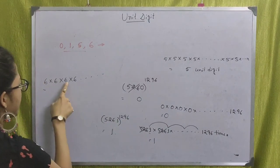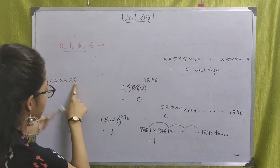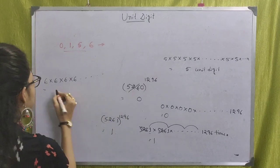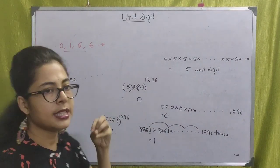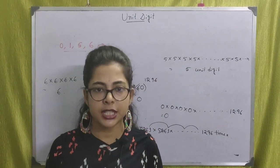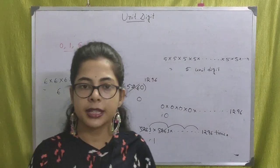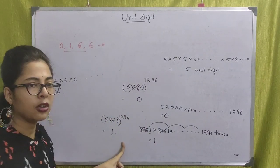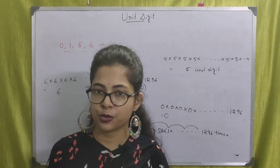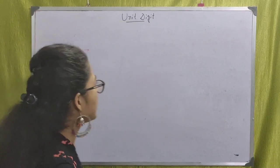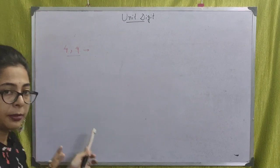If you have a 6 as the unit digit, the unit digit of the result is always 6, no matter the power. This is the first rule. The second rule: numbers with unit digits 0, 1, 5, or 6 always give the same unit digit regardless of the power.